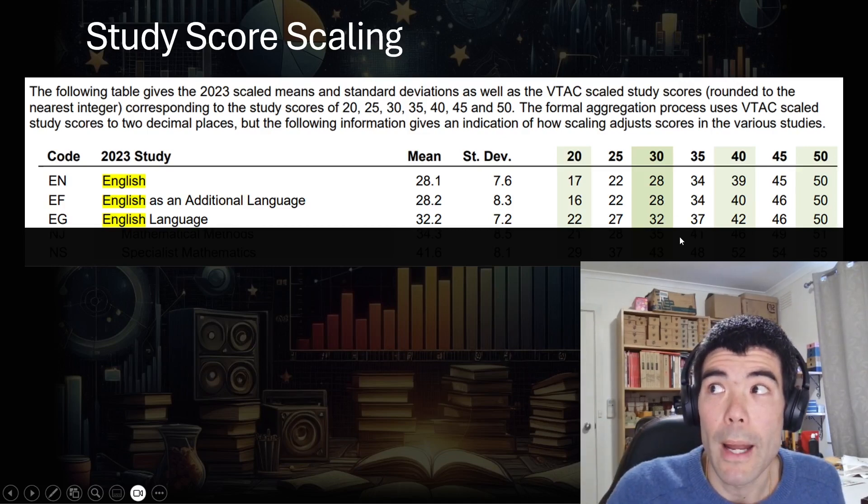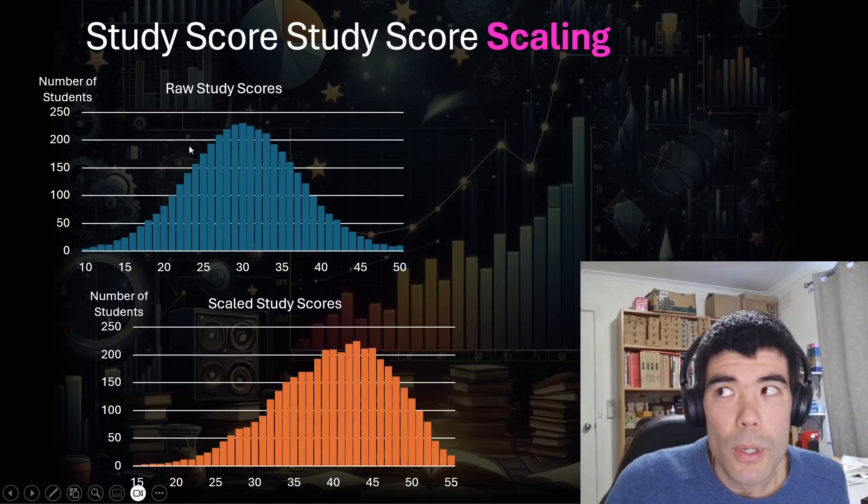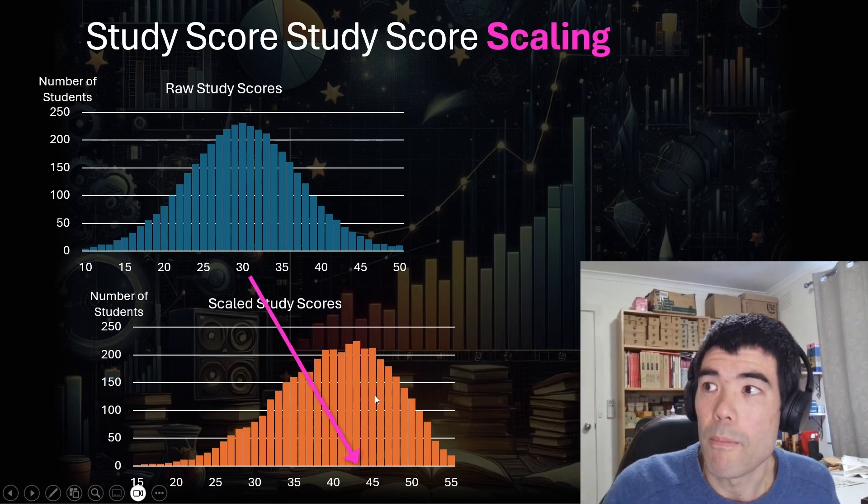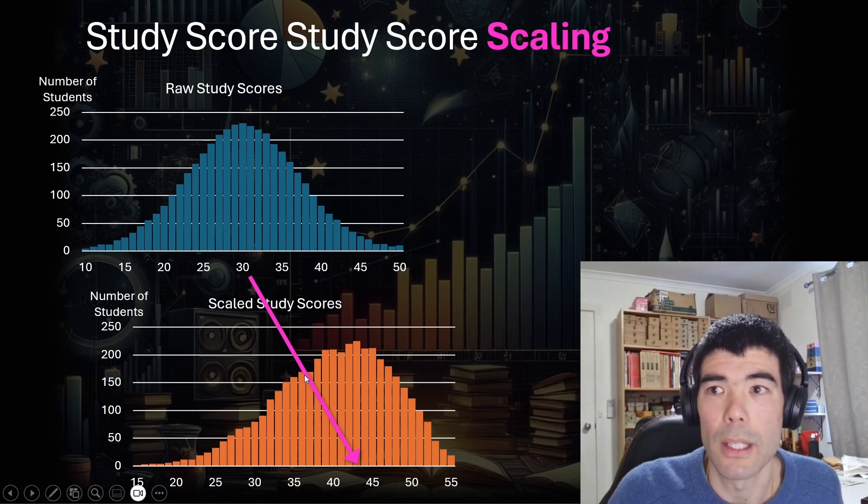So now let's talk a little bit more about how this scaling is actually calculated. So if we take an example, raw study scores fall on a bell curve, and the specialist math scaled study scores probably look something like this, where the mean of 30 has gone up to 43. The distribution is no longer normal, probably has a longer tail on the left side.